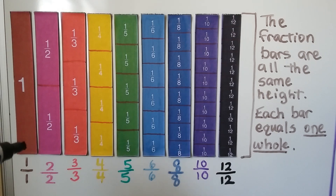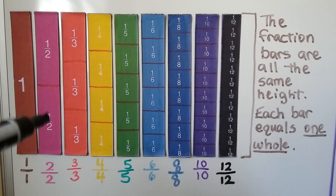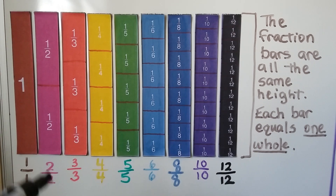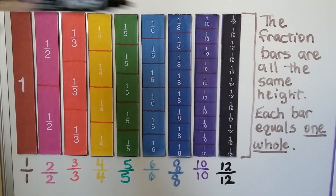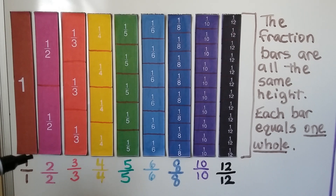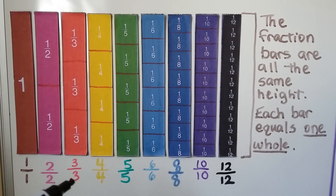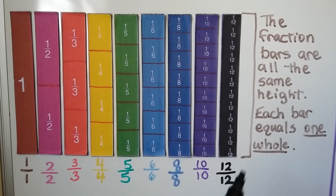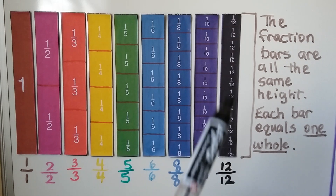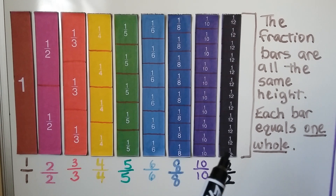This is one whole. Here we have a half and a half — when we put two halves together, that is equal to one whole. Notice how they're all the same length and height; each bar equals one whole. If we split it into three parts, a third, a third, and a third, that is three thirds, equal to one whole. And we can do it going all the way to twelfths — if we split it into 12 parts and have all 12 of them, we have one whole bar.